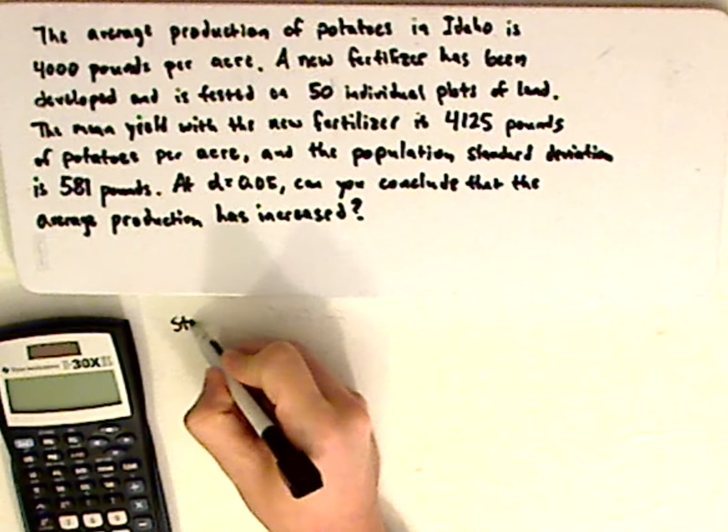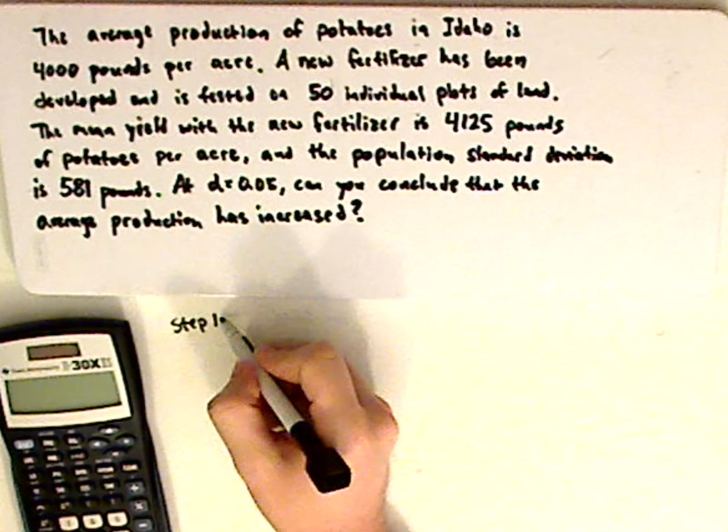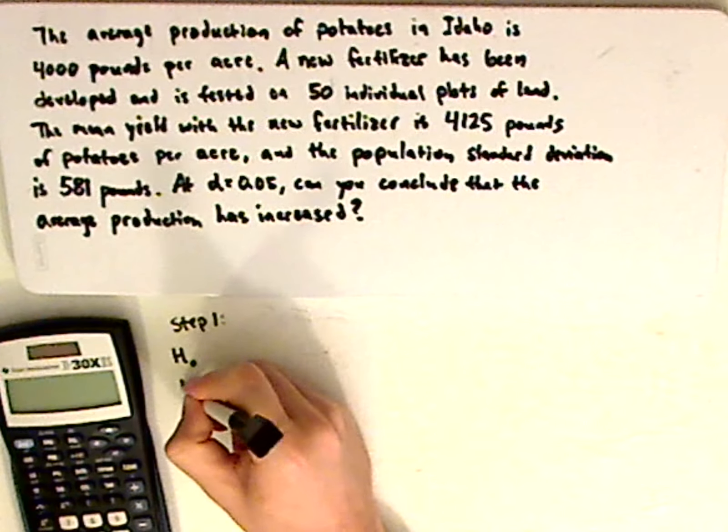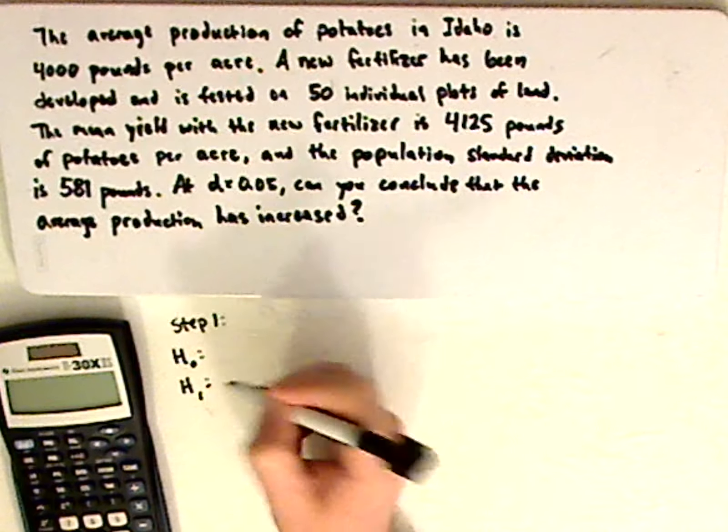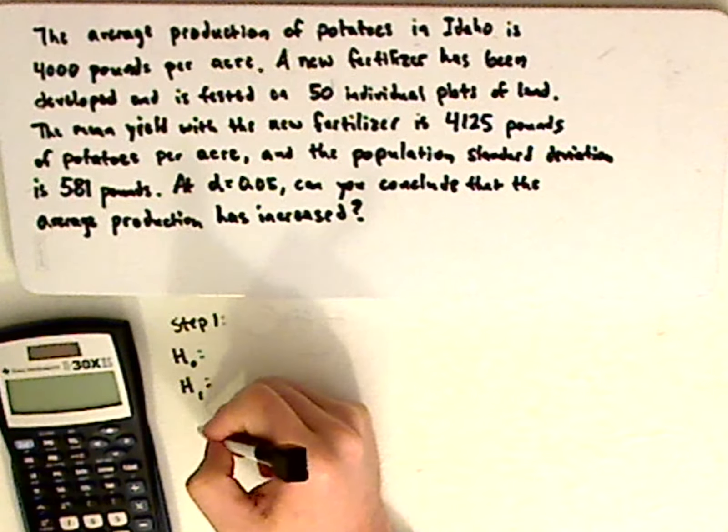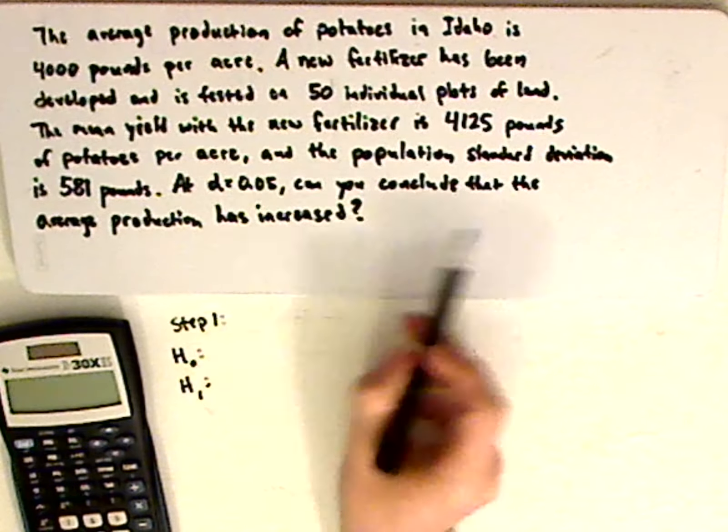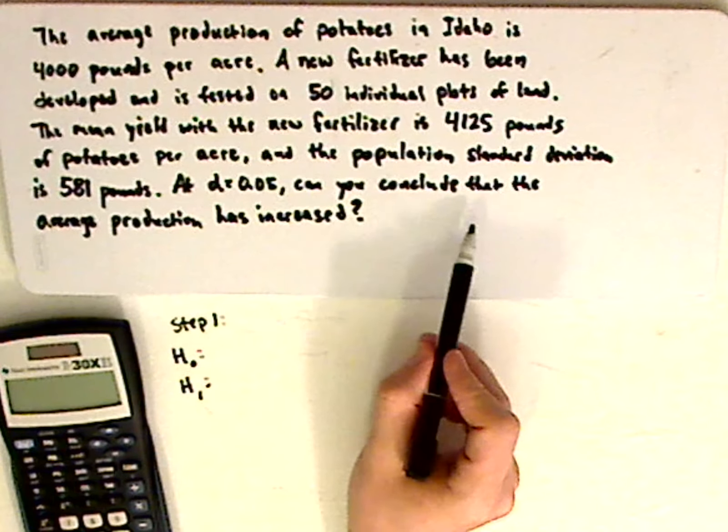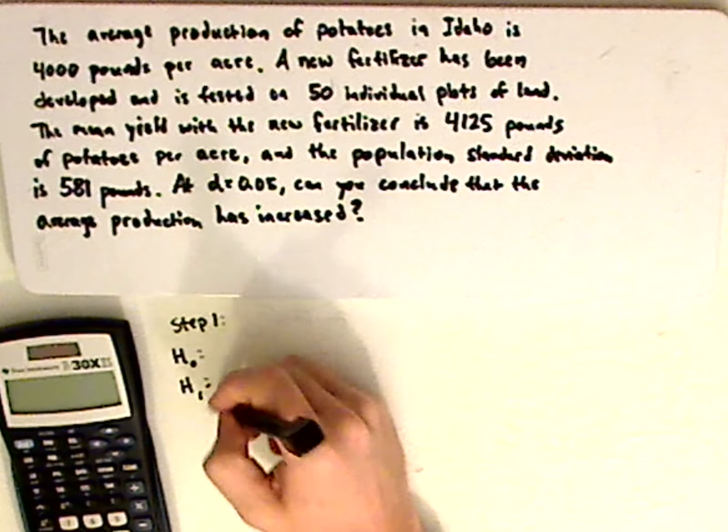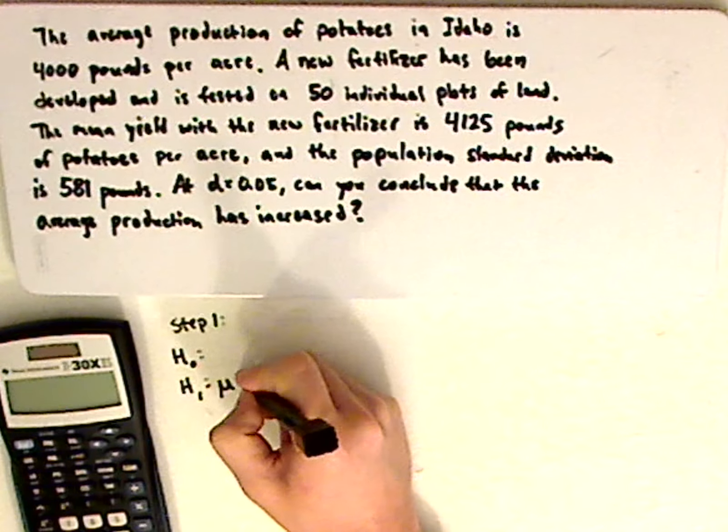So step number one is you want to list out your hypotheses, and you have your null hypothesis and then your alternative hypothesis. Let's list out the claim first. Can you conclude that the average production has increased? So mu, or the mean of the population, greater than,